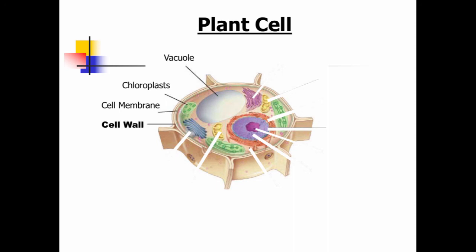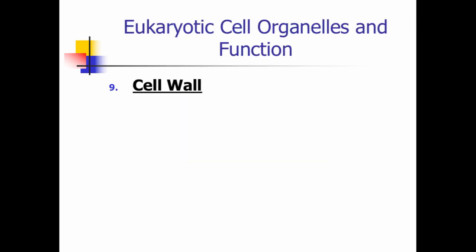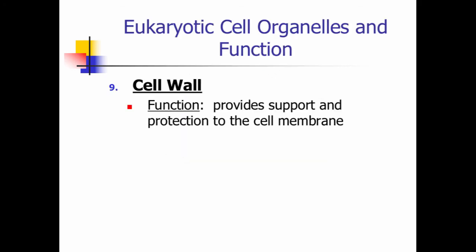And then the last one that we're going to talk about that is special just for the plant cell is the cell wall. Now the cell wall is going to be on the outside of the cell membrane. So it is a lot stronger and thicker, and it's actually made from the carbohydrate, the polymer cellulose. So the cell wall's function is it provides support and protects not only the cell, but also the cell membrane. It's always going to be found outside the cell membrane. So cell wall first, and then the cell membrane.